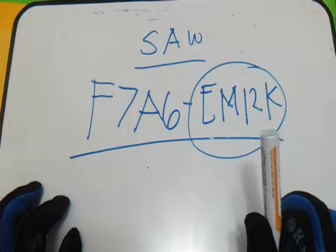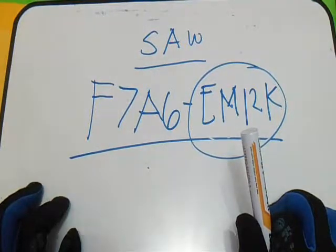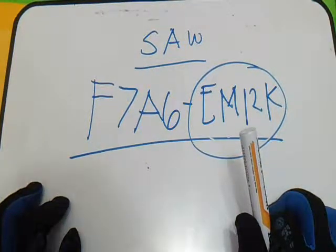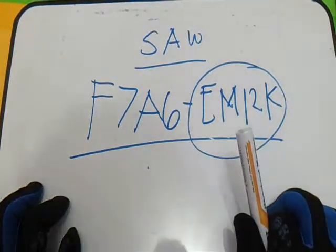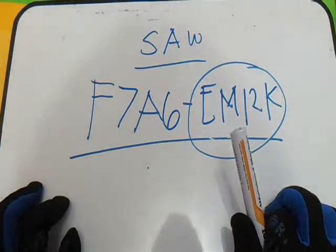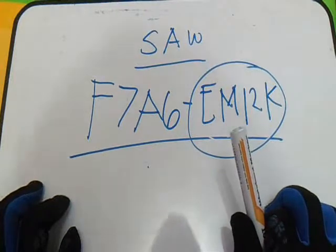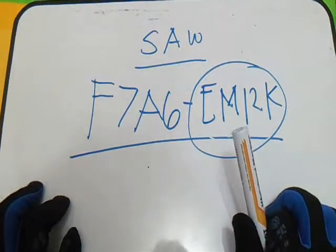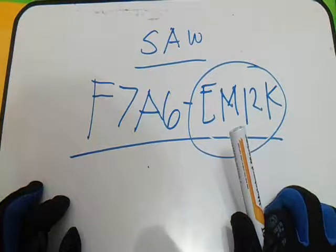This is the Submerged Arc Welding identification system. SAW is another welding process. This method is semi-automatic.